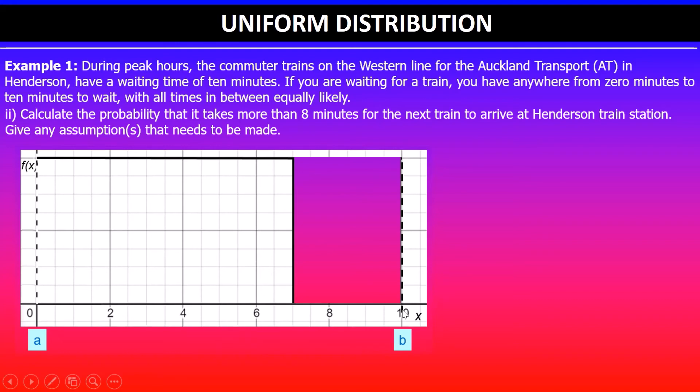This shaded area will give you the probability. It's a rectangle, so area of a rectangle is given by base times height. The height is one-tenth, which is 0.1. Substituting, area equals base - the base of this shaded area is 10 take away 7, so 10 minus 7, times the height of 0.1.